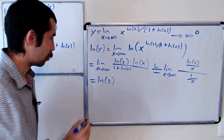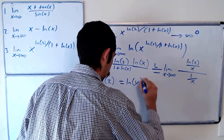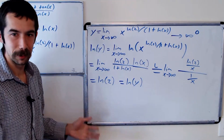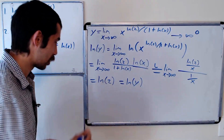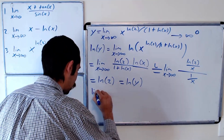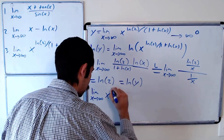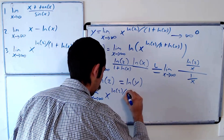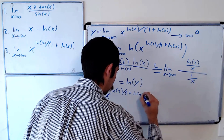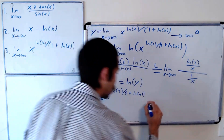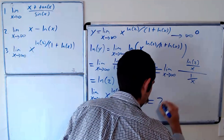But that's not the final answer. ln of y is equal to ln of 2. Raising both sides as a power of e, we get that the limit as x goes to infinity of x to the ln of 2 over 1 plus ln of x — which is y — is equal to e to the natural log of 2, which is 2.